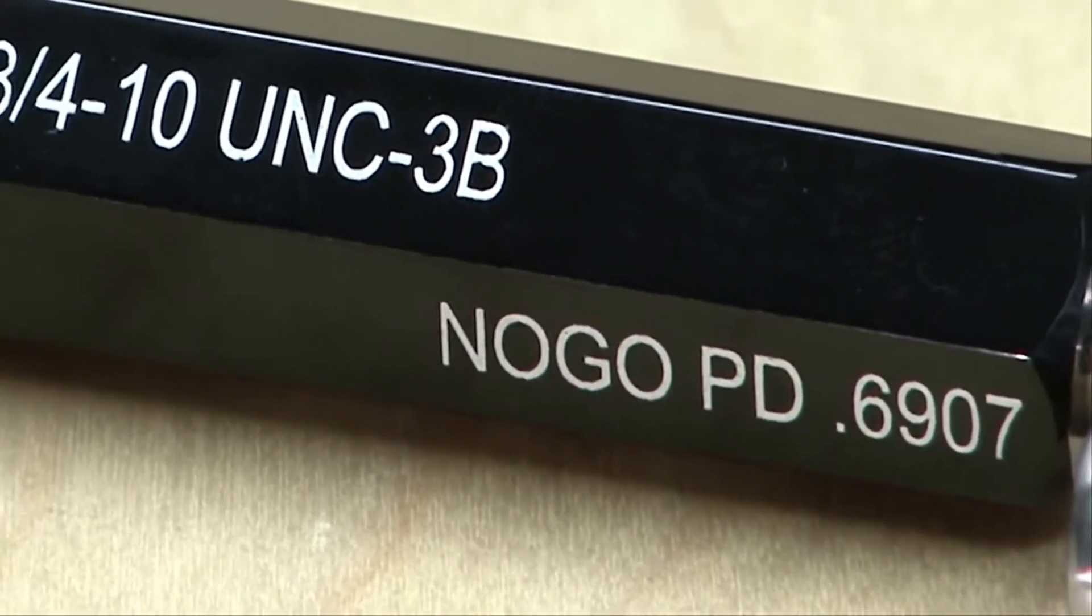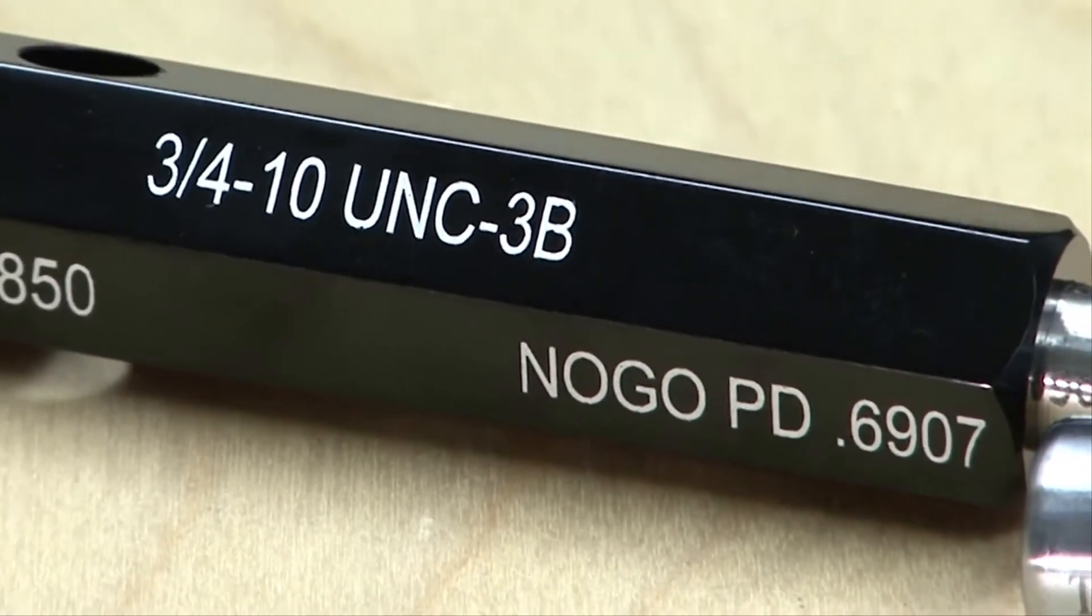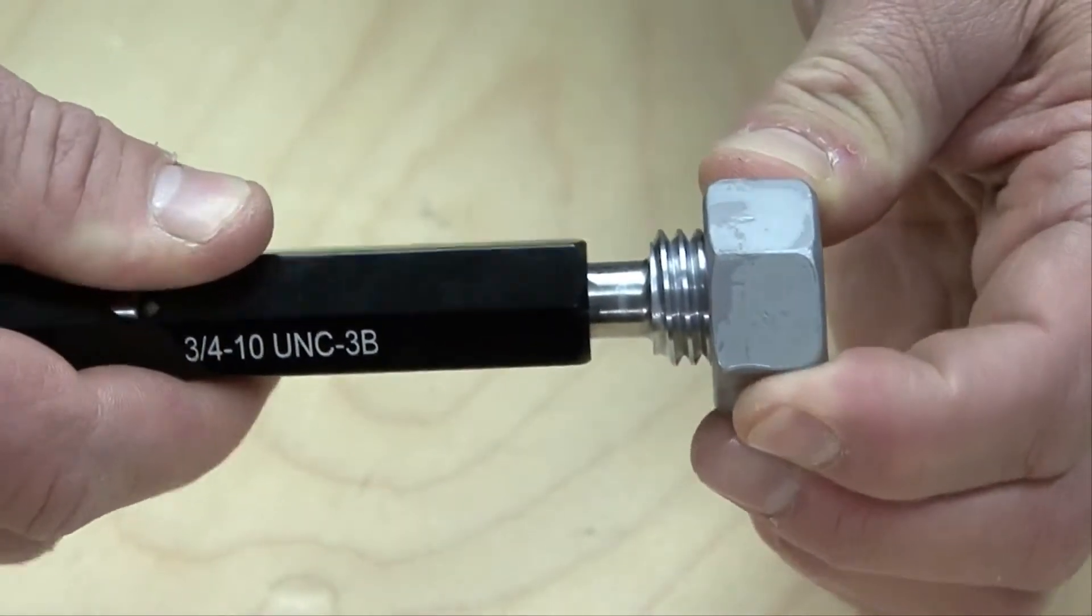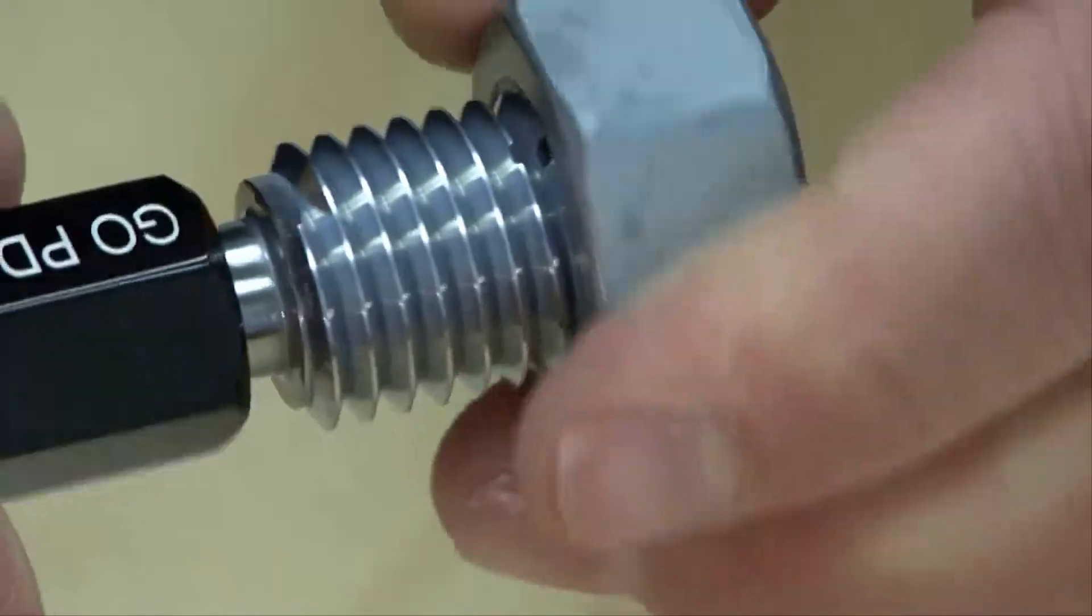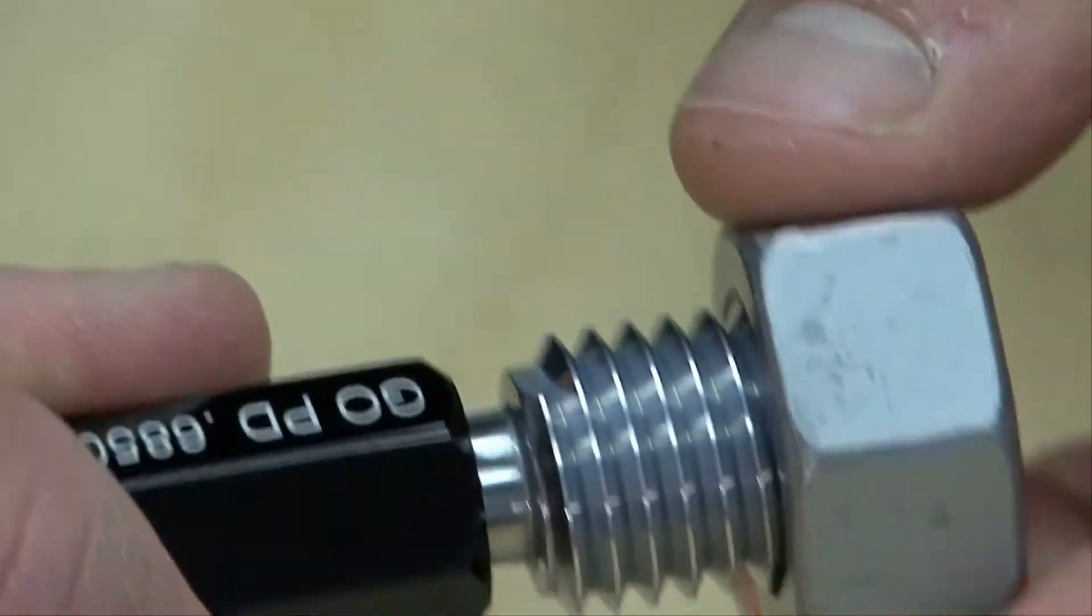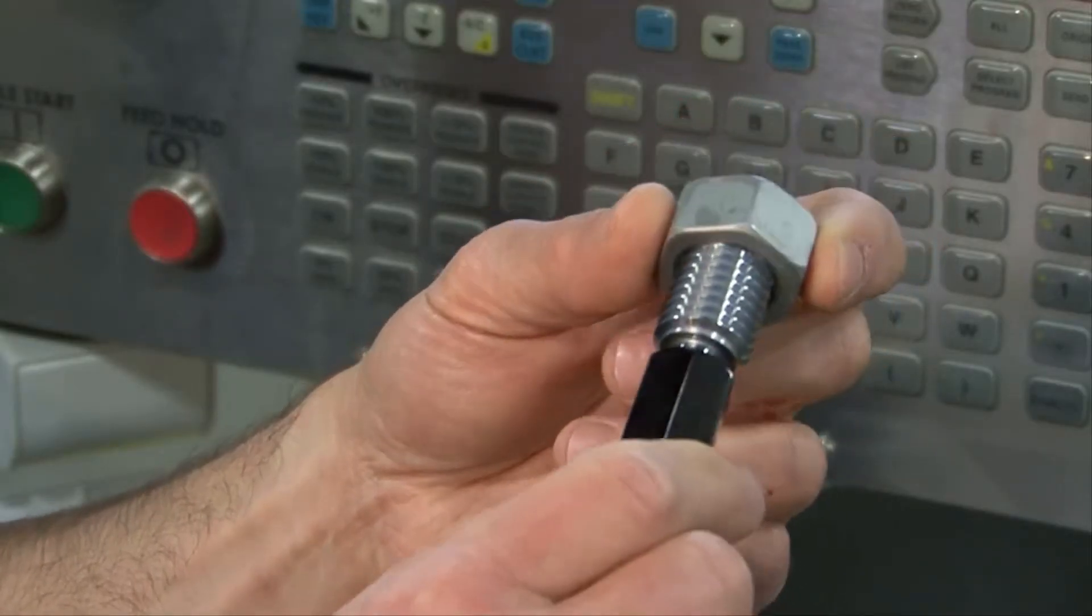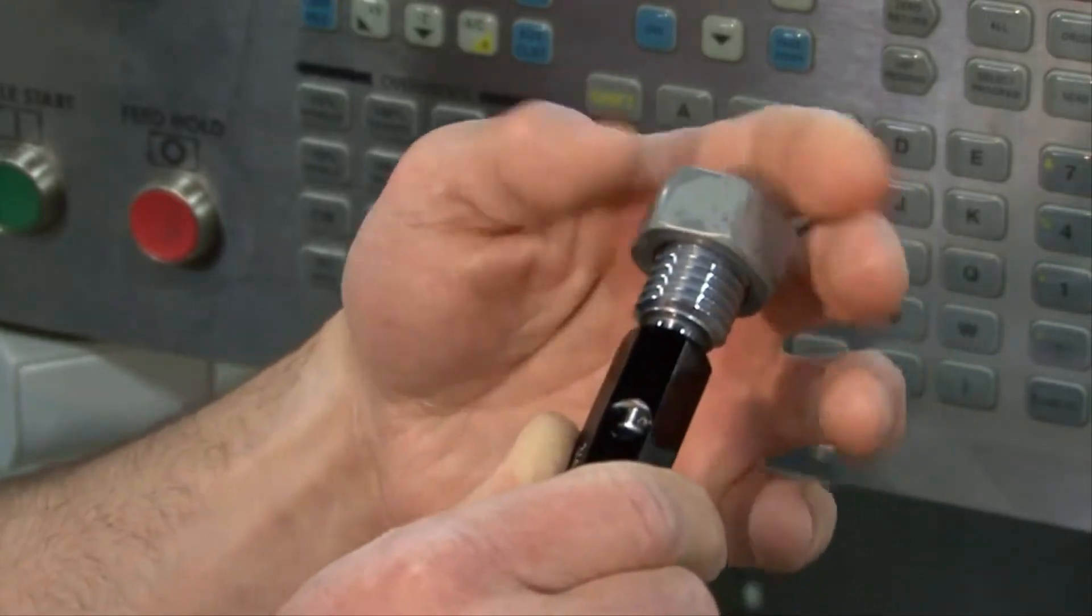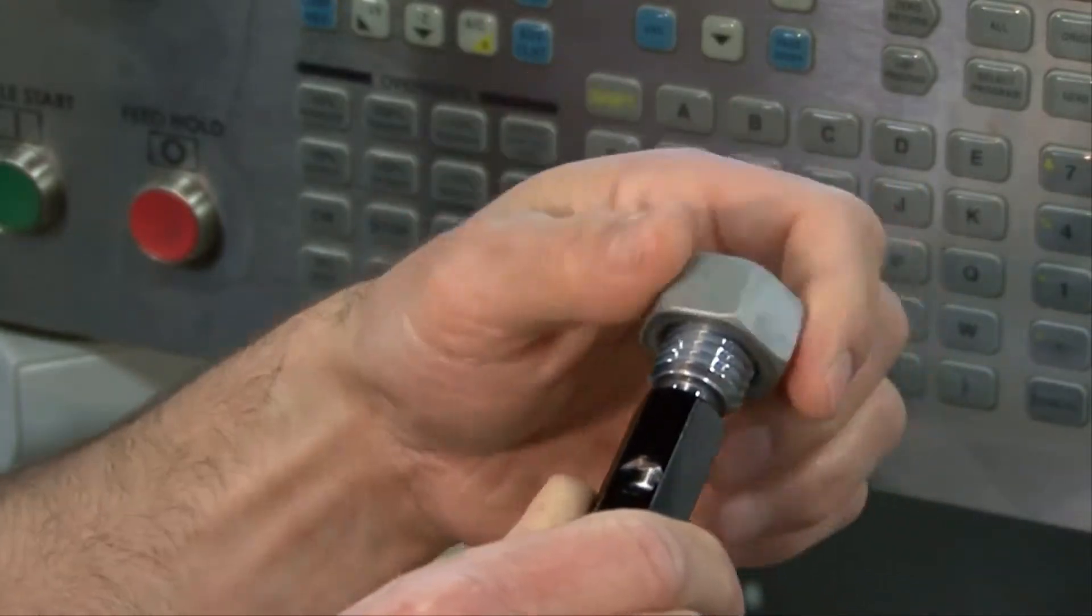The no-go thread plug gauge should not enter the part more than three turns. Although in practice, it is advisable to limit the amount of turns to one and a half to two turns maximum. The user just simply counts turns. The end user should review the thread specifications in detail as there are variations to the above no-go gauging practice depending on the thread standard.